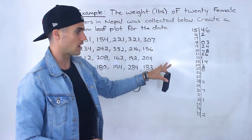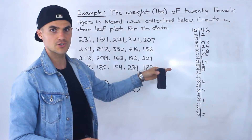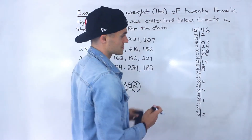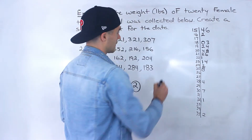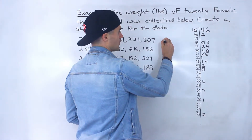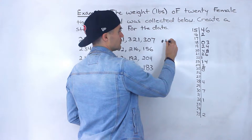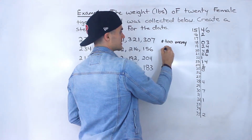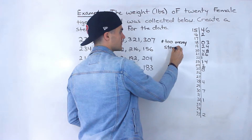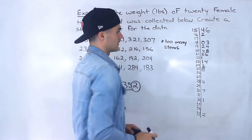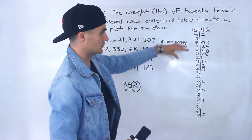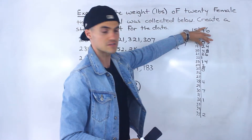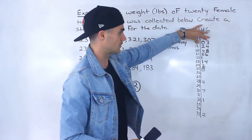Now if you look at this stem-leaf plot, what is the issue? Notice that it's super spread out, and so we have an issue of too many stems, which means as a result there are too few leaves. It's hard to tell a pattern from this.